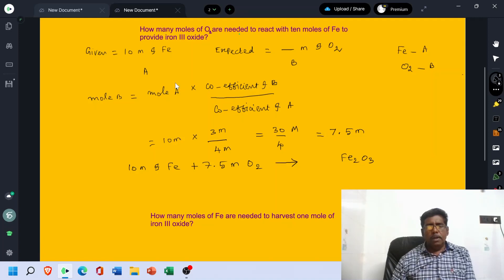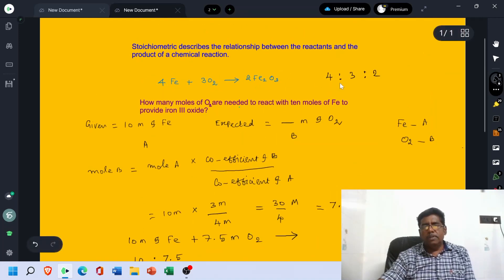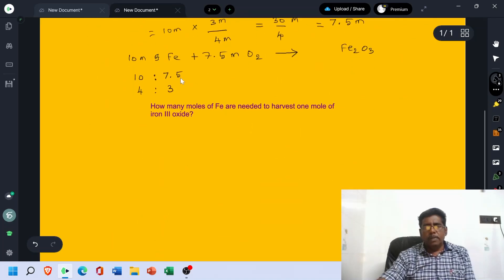10 is to 7.5. What about the ratio? 4 times 2.5 is 10, 3 times 2.5 is 7.5. So they are in the ratio of 4 is to 3. See this equation. The stoichiometric ratio is 4 is to 3 is to 2. If you mix 7.5 mols of O2 with 10 mols of Fe, we can harvest 5 mols of Fe2O3.